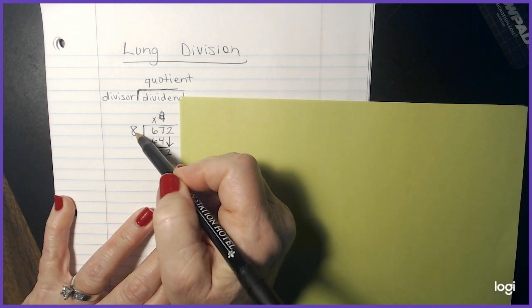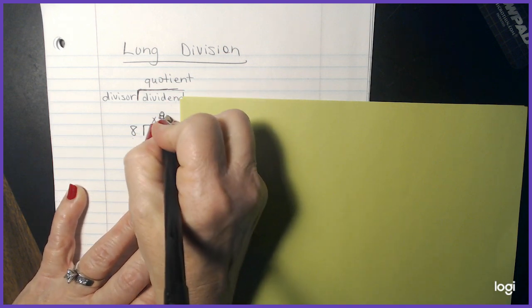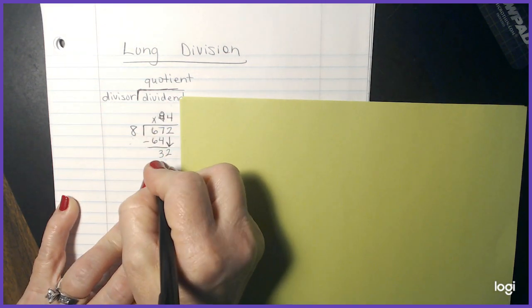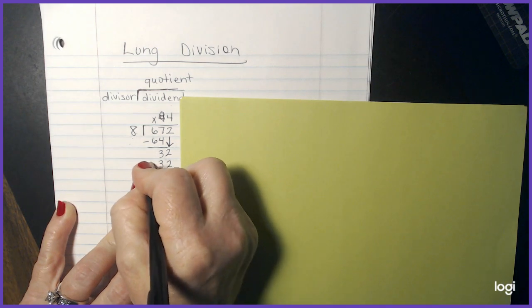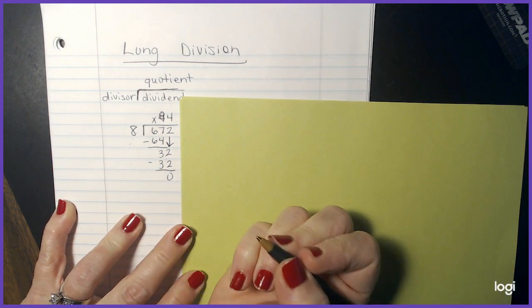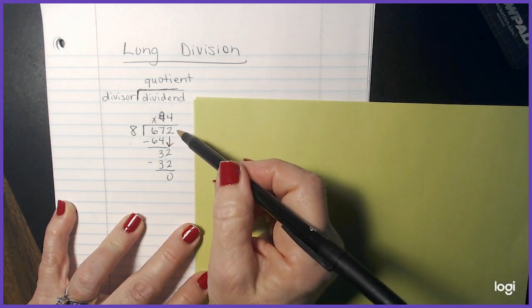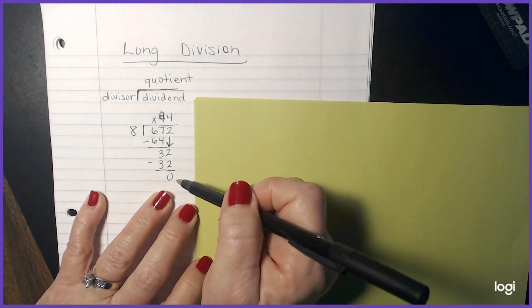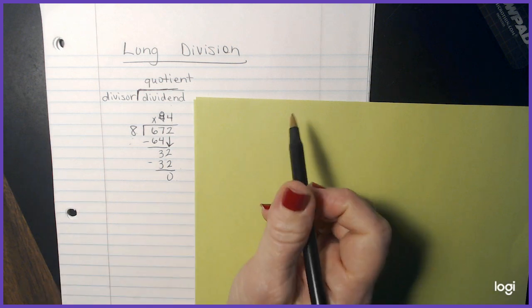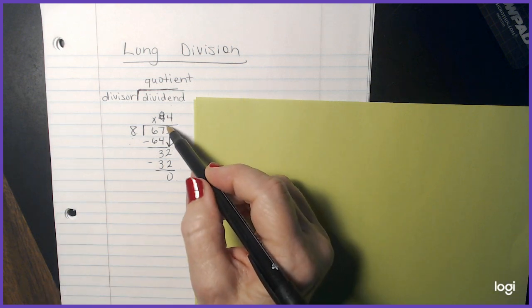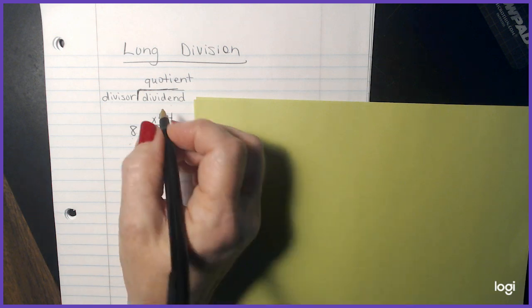And now I can see how many times eight goes into 32 and that's four times. And eight times four is 32. And my answer is zero. I have no more numbers left in the dividend to bring down. I ended with a zero. So my division problem is finished. My answer is a sloppy 84.